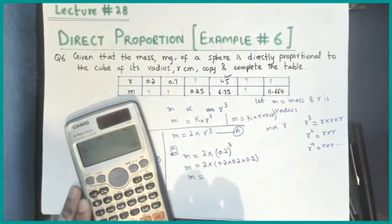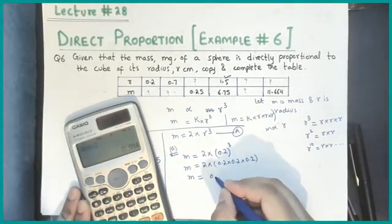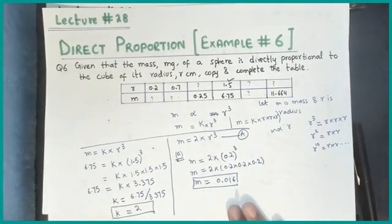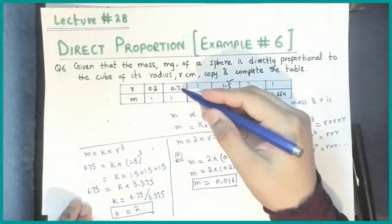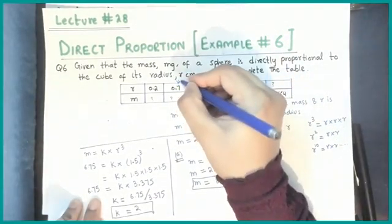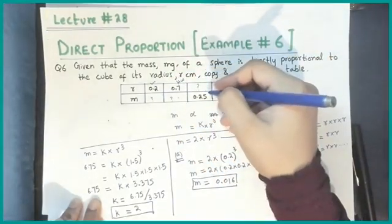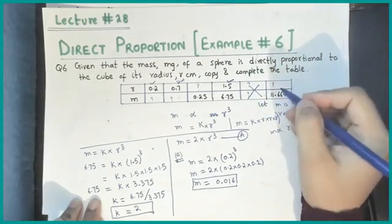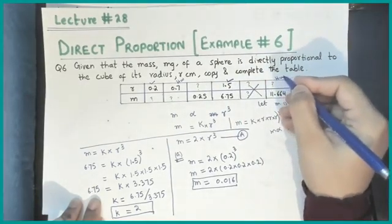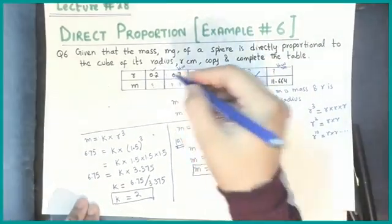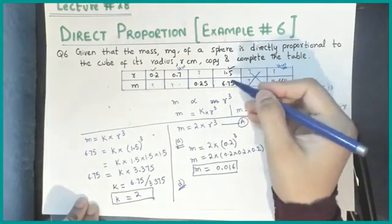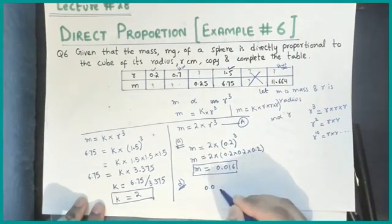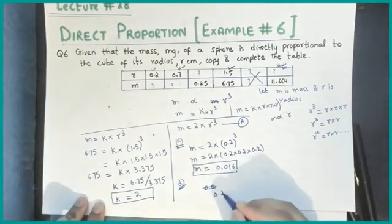That gives me m equals 0.016. The other parts where both r is given and m is given are your homework. We are now doing part D, where m is given and you don't have r.